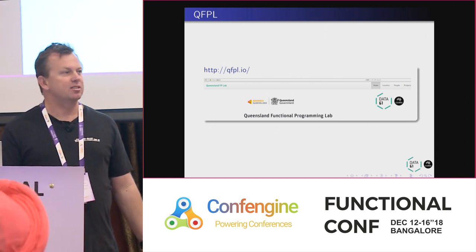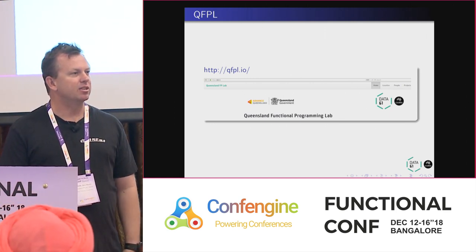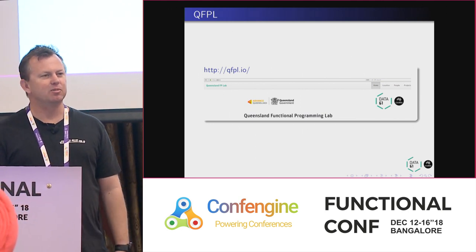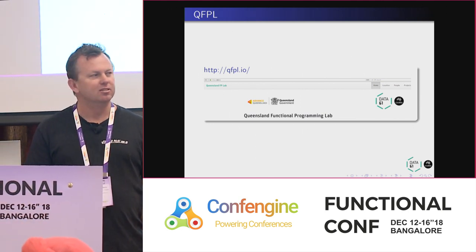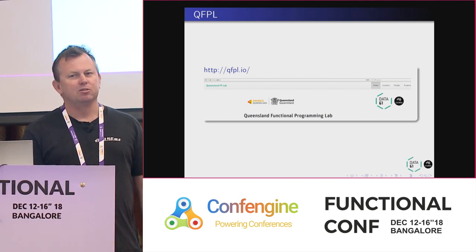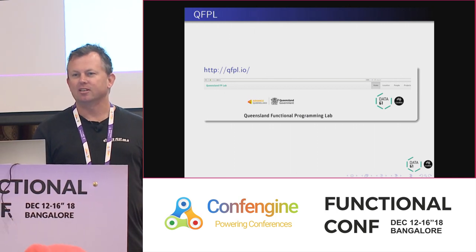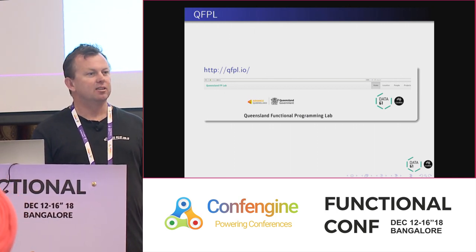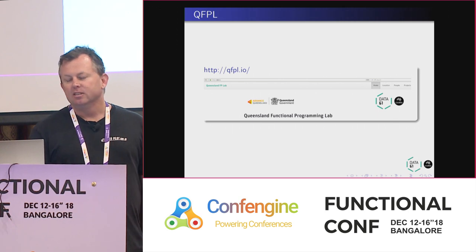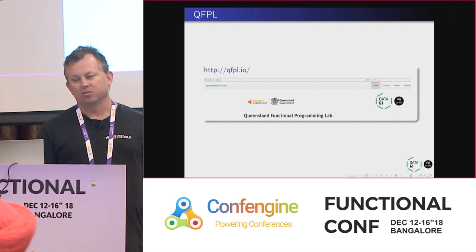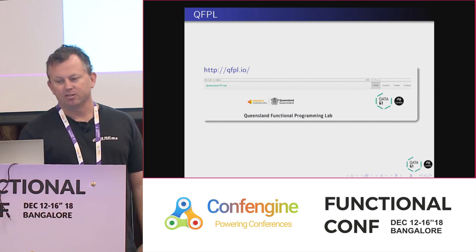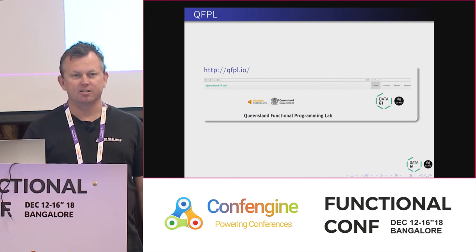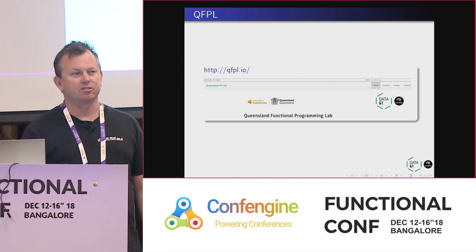The Queensland Functional Programming Lab is my team. We generally write Haskell more than anything, but we don't necessarily write only Haskell. We work on a lot of open source projects. We're working on a banking project at the moment in Haskell, and it's sponsored by the state of Queensland Government and CSIRO, the Commonwealth Research Organisation.